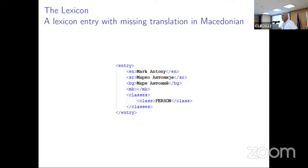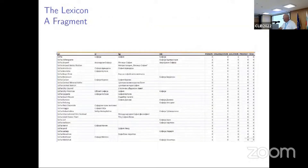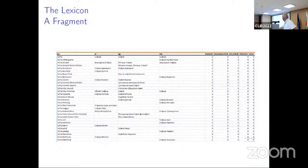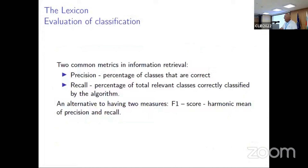Here is an example with a blank field: the lexical entry for Mark Anthony has translations for Bulgarian and Serbian, but no translation for Macedonian, because there is probably no article about Mark Anthony in Macedonian Wikipedia. The lexicon shown in Excel view has entries beginning with the word Sofia, with translations in Serbian, Bulgarian, and Macedonian. Some cells are blank, and the classification column shows location marked as 1 for Sofia.